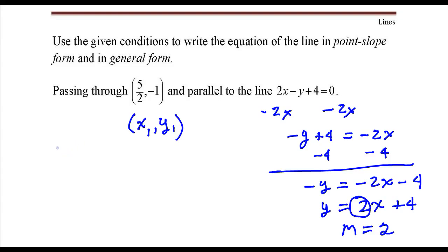So in point-slope form, which is written with this equation, all I need to do is substitute those values, so y minus negative 1 equals 2 times (x minus 5 over 2).